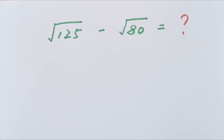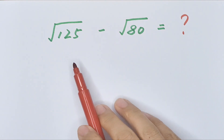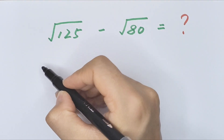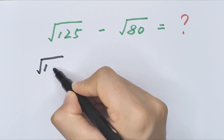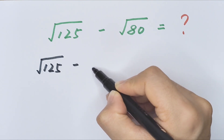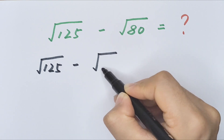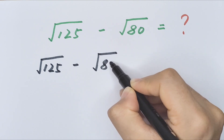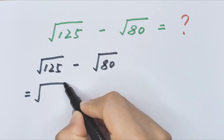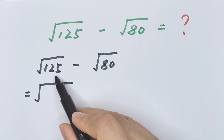Hello everyone, welcome to Math4U. In this video we will solve this math problem without using a calculator. So, square root of 125 minus square root of 80.